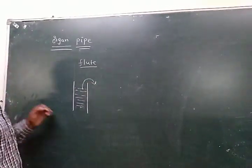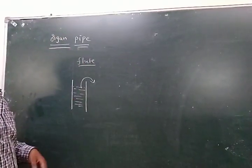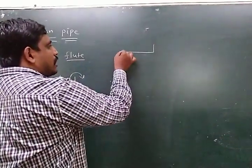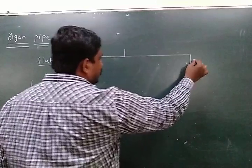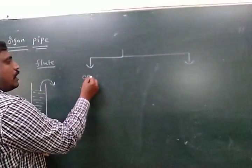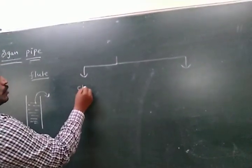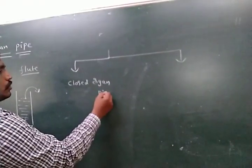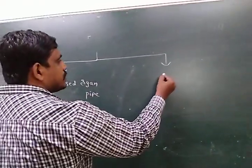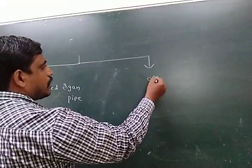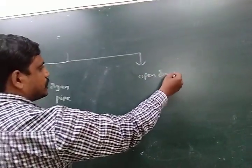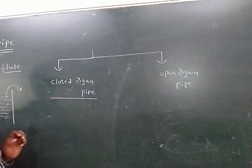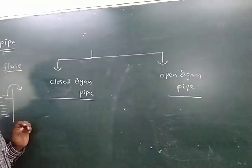An organ pipe is a cylindrical pipe containing an air column. Organ pipes are classified into two types: the first one is a closed organ pipe, and the second one is an open organ pipe.